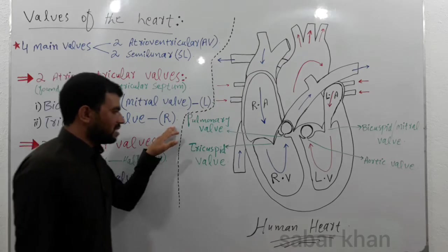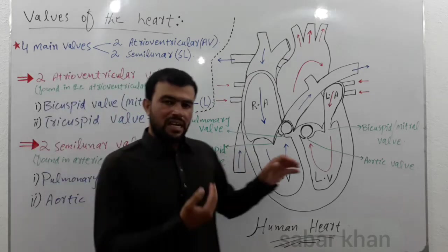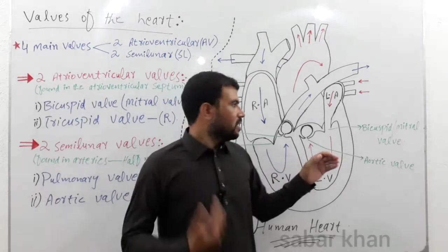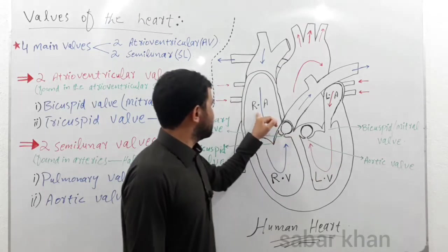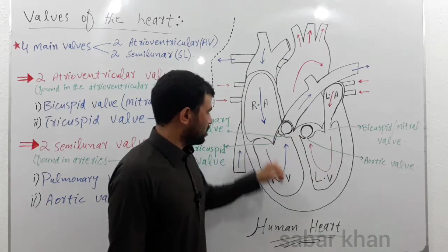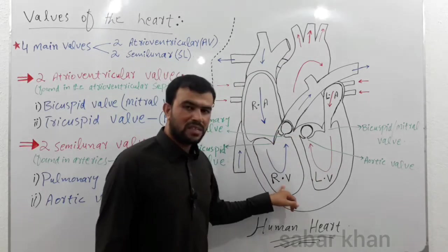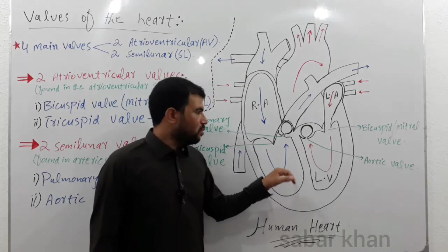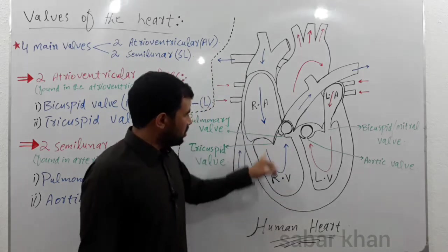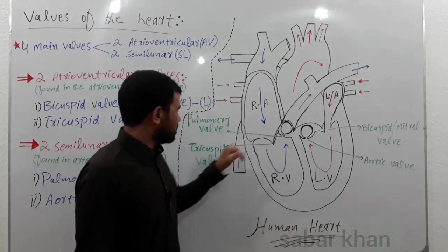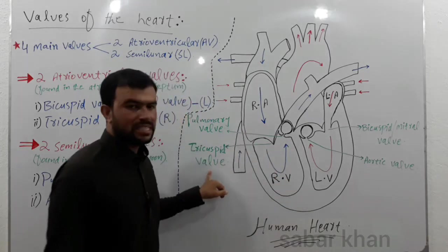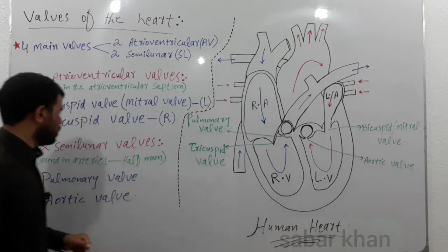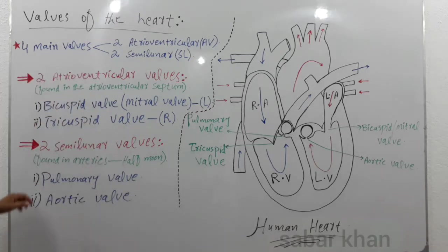The second atrioventricular wall is the tricuspid valve, which is present on the right side of the heart. This is the right atrium, this is the right ventricle, and the wall present between these two chambers is called the tricuspid valve.